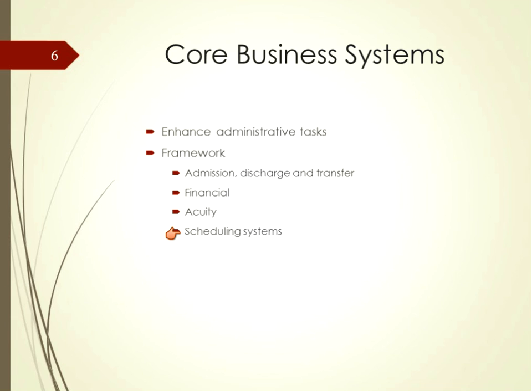Scheduling systems coordinate staff, services, equipment, and allocation of patient beds. They are frequently integrated with other types of core business systems. By closely monitoring staff and physical resources, these systems provide data to the financial systems. For example, resource scheduling systems may provide information about operating room use or availability of intensive care unit beds and regular nursing unit beds. These systems also provide great assistance to financial systems when used to track medical equipment within a facility. Scheduling systems help track resources within a facility while managing the frequency and distribution of those resources.